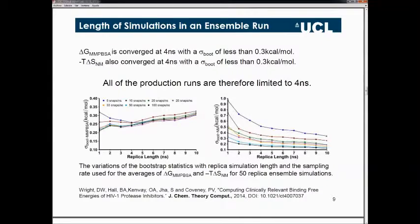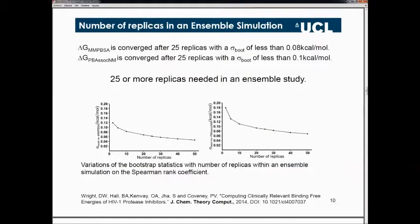To estimate the best ensemble size, we plotted the variation of bootstrap error with number of replicas, performing up to 50 replicas. We found that after 25 replicas, although the error continues to go down, it's not changing substantially. So it's a trade-off: you need to decide how much computational resource to expend for the reduction in error. We found that 25 replicas is good enough.